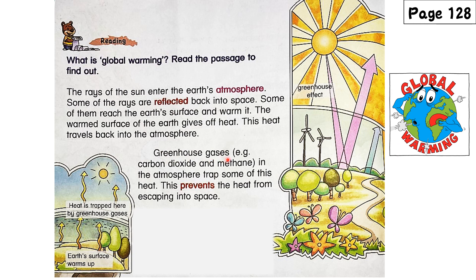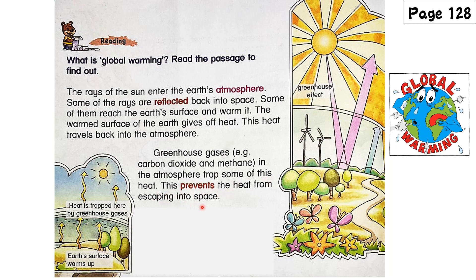Greenhouse gases — for example, carbon dioxide and methane — in the atmosphere trap some of this heat. This prevents the heat from escaping into space. Greenhouse gases are 温室气体 (greenhouse gases).